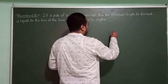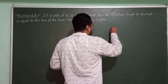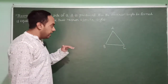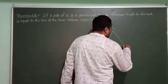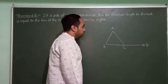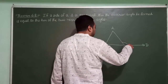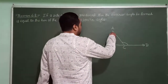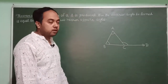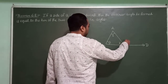Now I am going to draw the figure. The statement says if a side of a triangle is produced — suppose this is triangle ABC. I am producing or extending side BC up to D. The exterior angle so formed is this angle.